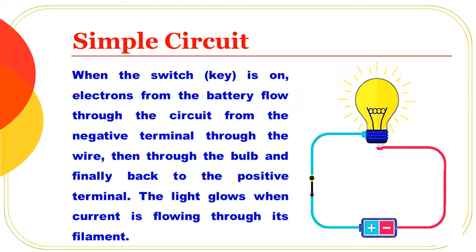When the switch is on, electrons flow from the battery through the circuit — from the negative terminal, through the wire, then through the bulb, and finally back to the positive terminal of the battery.